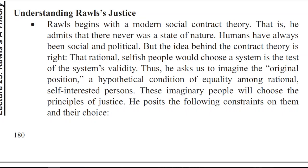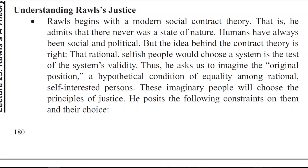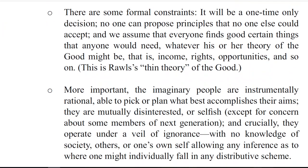He posits the following constraints on them and their choice. There are some formal constraints: it will be a one-time-only decision; no one can propose principles that no one else could accept; and we assume that everyone values certain things that anyone would need, whatever their theory of the good might be — that is, income, rights, opportunities, and so on. This is Rawls' thin theory of the good.